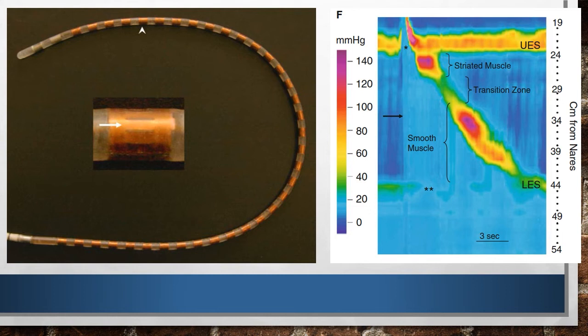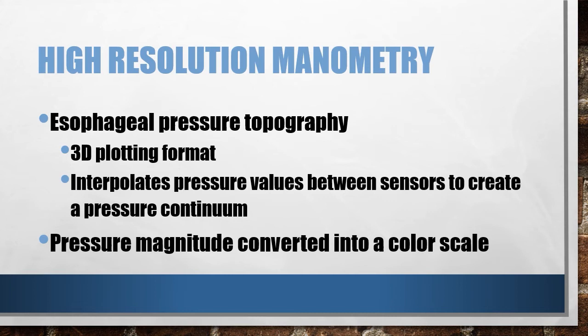To display the large amount of data, color topography is used. A three-dimensional plotting format was devised for depiction of high-resolution manometry studies. Esophageal pressure topography interpolates pressure values between sensors to create a pressure continuum. Cold colors denote low pressures and hot colors denote higher pressures.